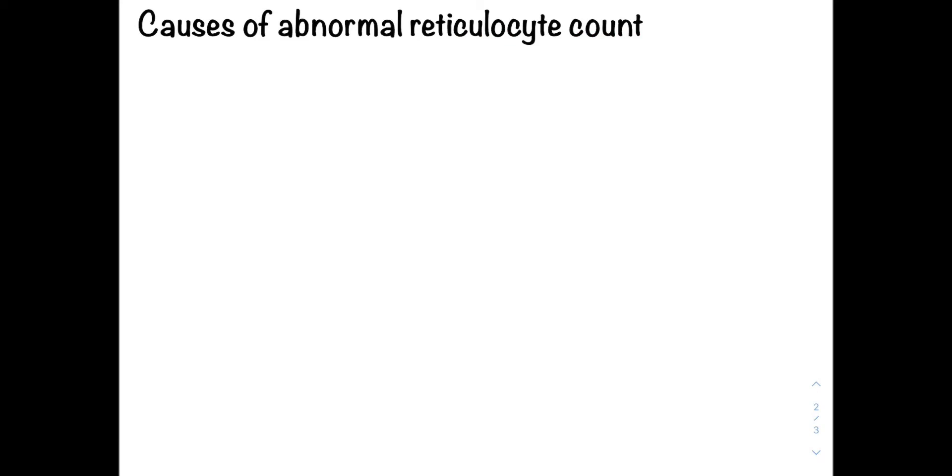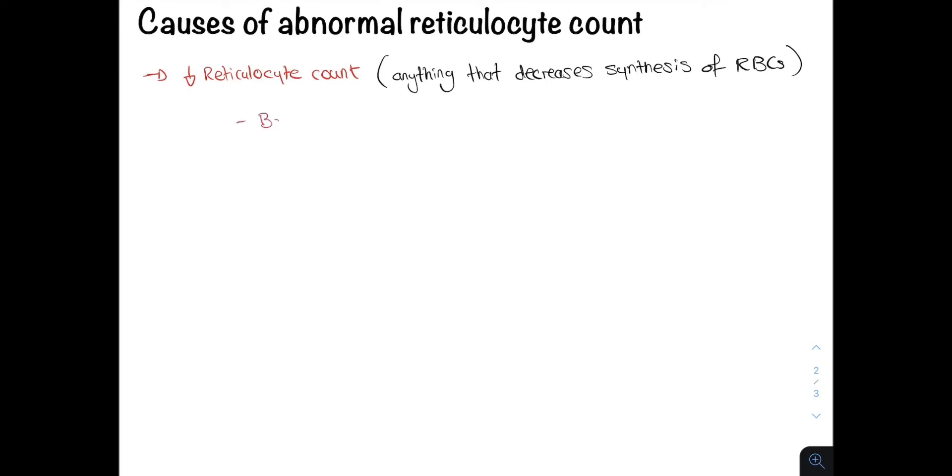From this you can logically determine what will decrease or increase the reticulocyte count. When you are thinking of the causes of a decreased reticulocyte count, think of anything that can decrease red blood cell synthesis. For example, bone marrow failure. Why does this result in a decreased reticulocyte count? Because this is the site of erythropoiesis. If this fails, red blood cells and other cells can't be produced.